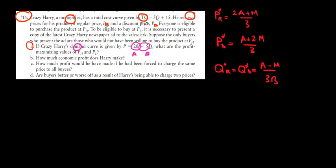What would we need? We need the marginal cost. The marginal cost has a relationship with the total cost, which is the derivative of the total cost with respect to quantity. So that's going to be 5Q plus 15, derivative with respect to quantity, which is equal to 5.